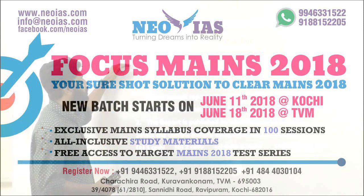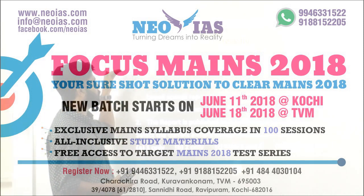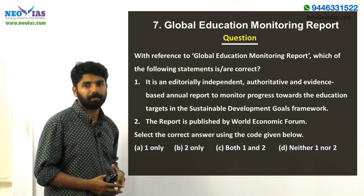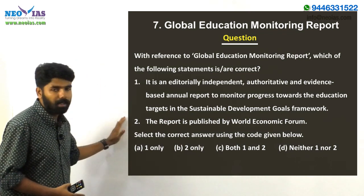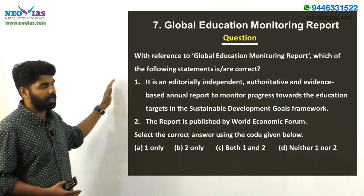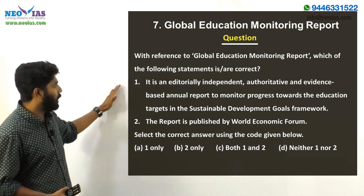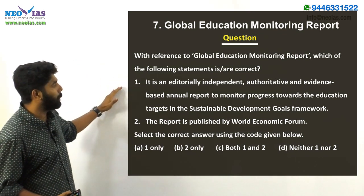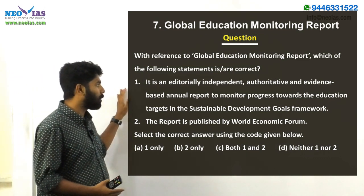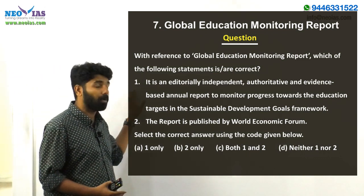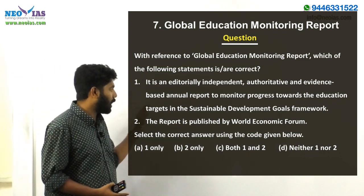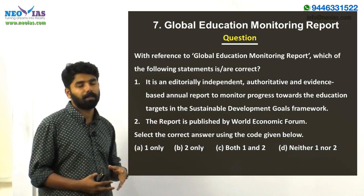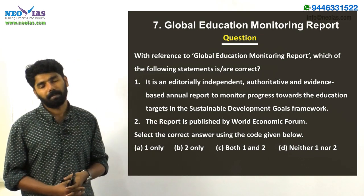The question asks: with reference to the Global Education Monitoring Report, which of the following statements is/are correct? This is a two-statement type question. Let us go through the first statement: it is an editorially independent, authoritative, and evidence-based annual report to monitor progress towards the education target in the Sustainable Development Goal framework.